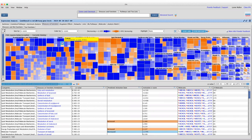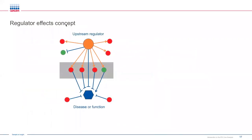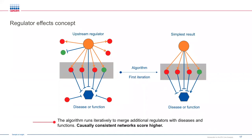We've talked about how upstream regulators affect genes in the data set and how genes affect diseases and functions. What might be really interesting is linking them all together — and that is the goal of Regulator Effects. The algorithm links regulators to molecules in the data set, and separately links diseases and functions to molecules in the data set. Over many iterations it connects more nodes, then calculates a consistency score based on how densely connected the network is and how causally consistent the information is from the upstream regulator down to that disease or function.